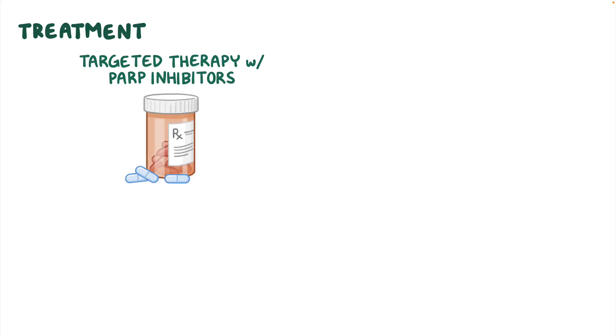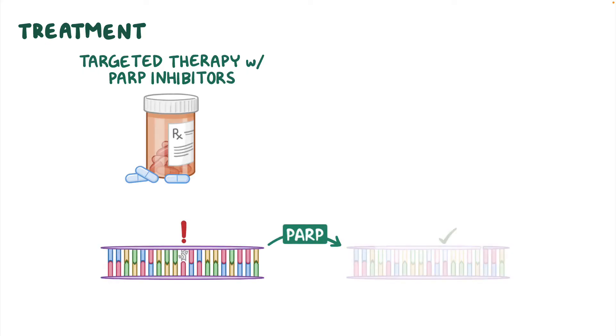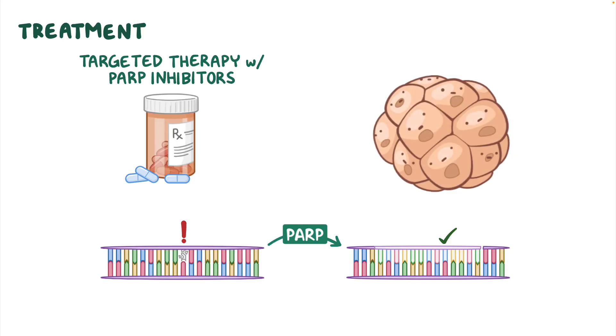Surgery is usually followed by chemotherapy and radiation therapy to kill any remaining cancer cells. In addition, individuals may also be prescribed targeted therapy with medications called poly-ADP ribose polymerase (PARP) inhibitors, which block the PARP enzyme that has a role in DNA repair. PARP inhibitors can prevent cancerous cells from repairing their DNA, ultimately causing these cells to die.